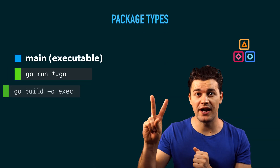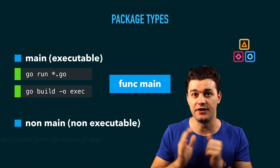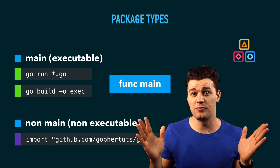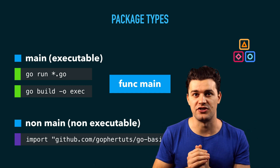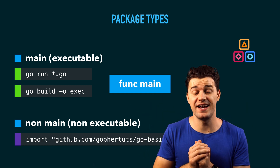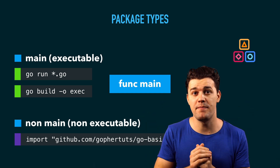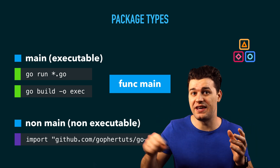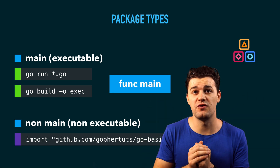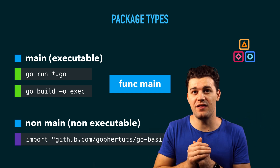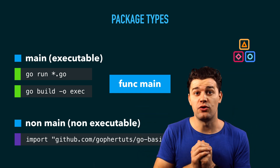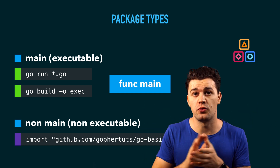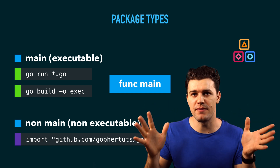Speaking of package types, there are two package types in Go: main packages and non-main packages, also known as executable packages or non-executable packages. When it comes to main or executable packages, you have to have a main package because you need an entry point — a function which begins the whole work. You can also use go run and go build tools to run or build that package. Non-main or non-executable packages provide functionality which can be imported or used in other packages or in the main package.